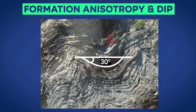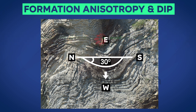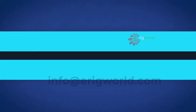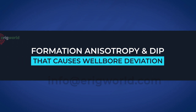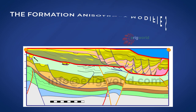To check the dip direction, we first mark the direction with the help of a compass — east, west, north, and south. In this example, the formation dip angle is 30 degrees and the dip direction is west, or the formation is dipping 30 degrees west. Let's learn how formation anisotropy and dip cause wellbore deviation.